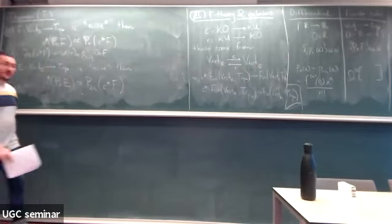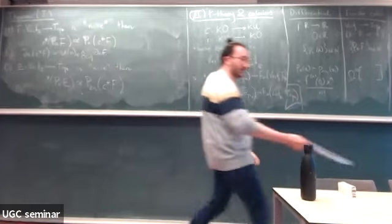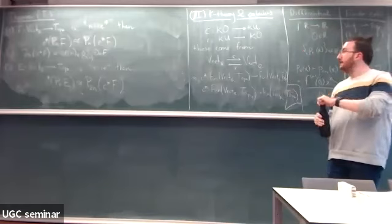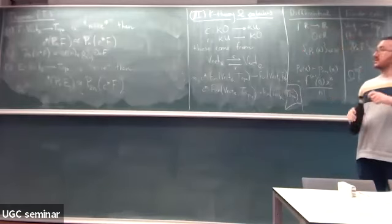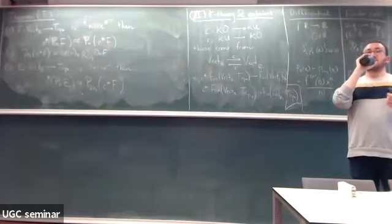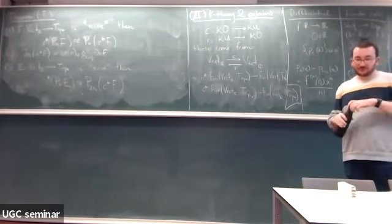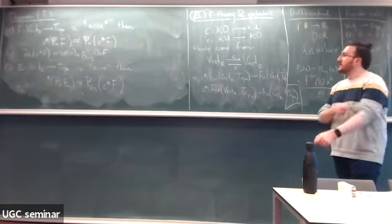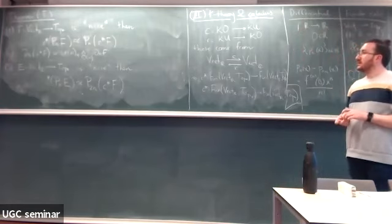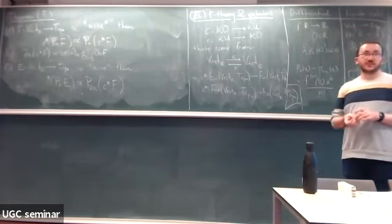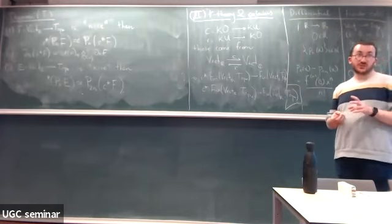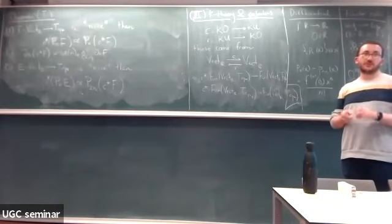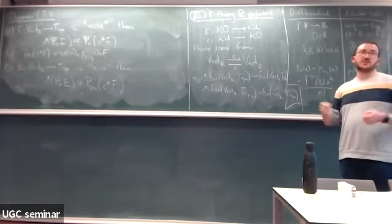The conditions for these results: 'nice' means the zeroth polynomial approximation of F is trivial — so F is reduced — and also that you know the connectivity of the map from F to its polynomial approximation.